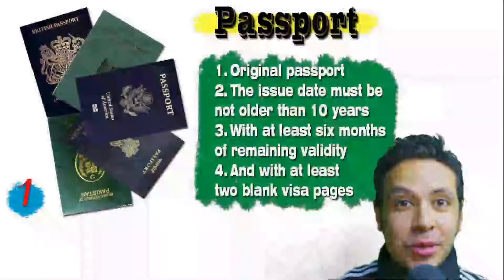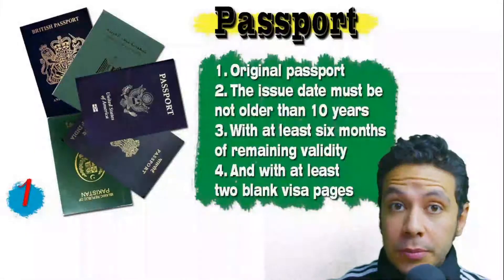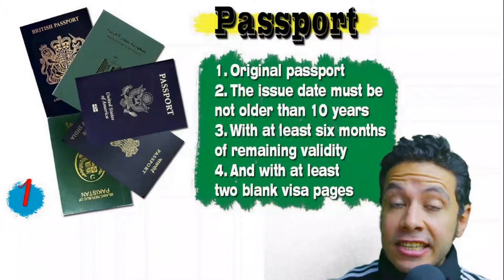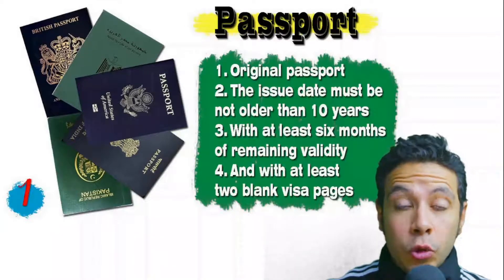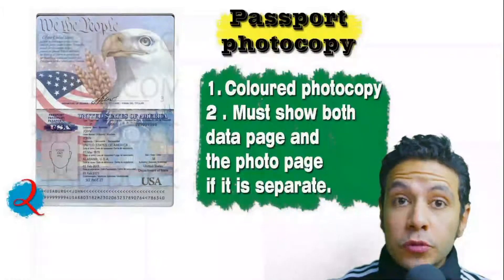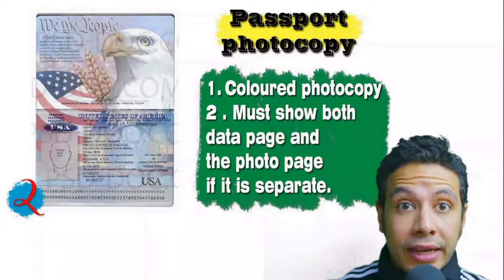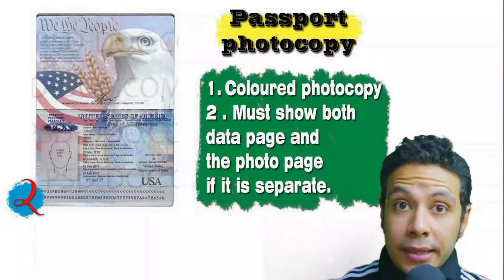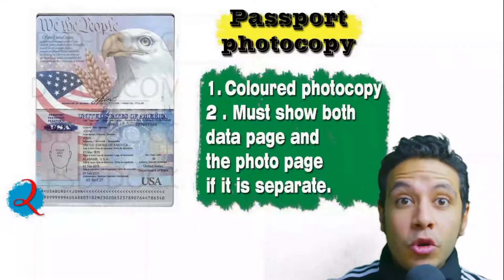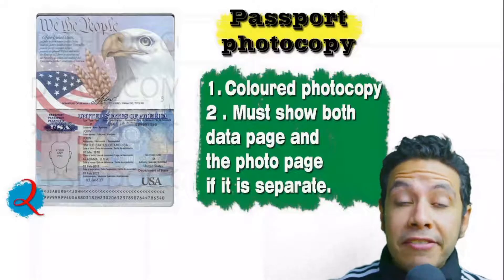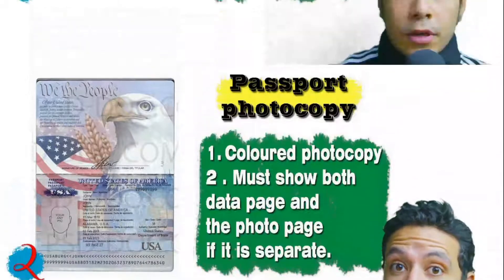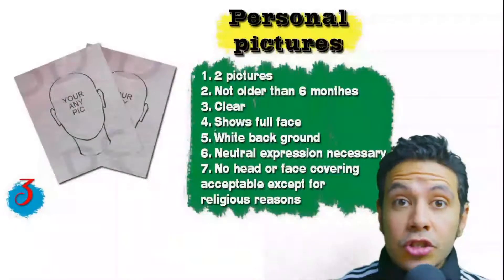Regarding required documents: your passport must be original, not older than 10 years, with at least six months of remaining validity and at least two blank visa pages for stamps. In many cases you will also need a photocopy — it might be one or more copies, preferred in color, showing both the data page and the photo page.